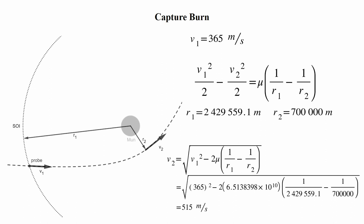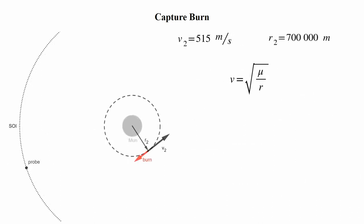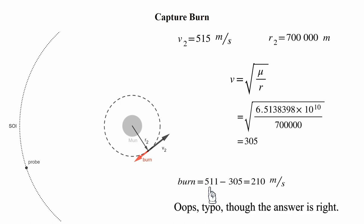We're almost there. The delta-v of our required burn to circularize here is simply the amount of velocity we need to shed to get the circular orbital velocity at this altitude. So we take out our orbital velocity formula, stick in the radius at 500 kilometers, pull out a calculator to get 305 meters per second. This means that our capture burn would be 515 minus 305, yielding 210 meters per second.